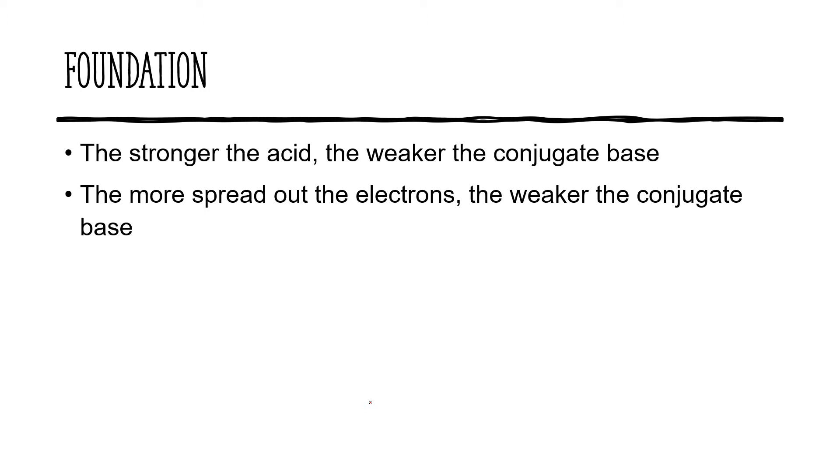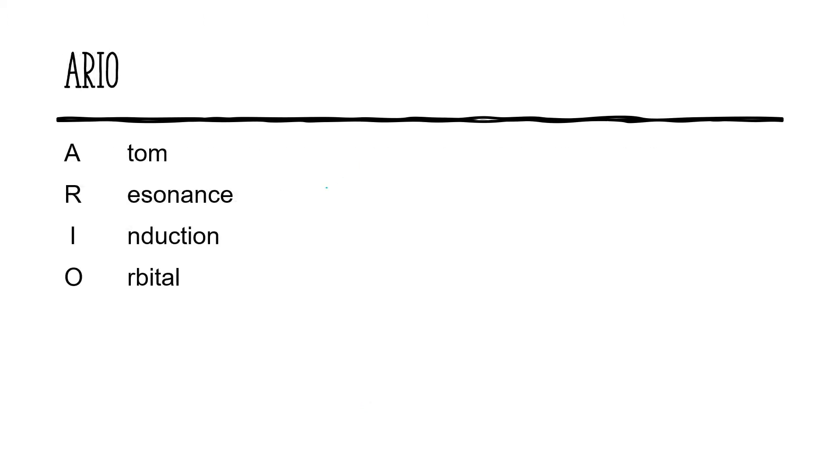The mnemonic that I recommend using to remember the different factors that affect acidity and basicity is ARIO. ARIO stands for atom, resonance, induction, and orbital. And on the MCAT, I would say the first three are easily the most important. We're going to go through each one of these in turn.